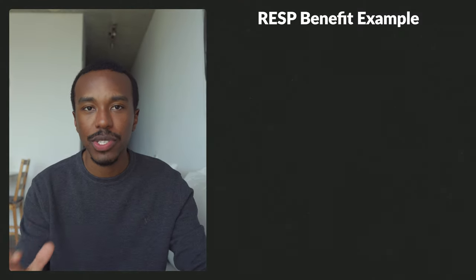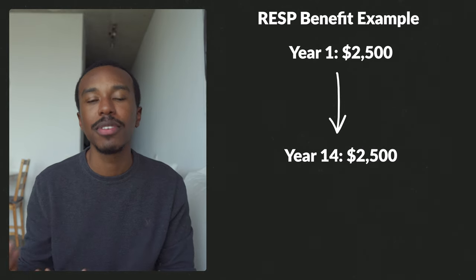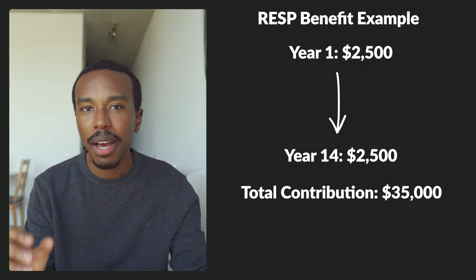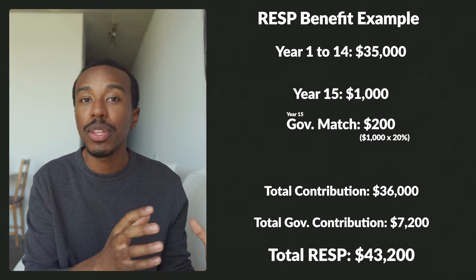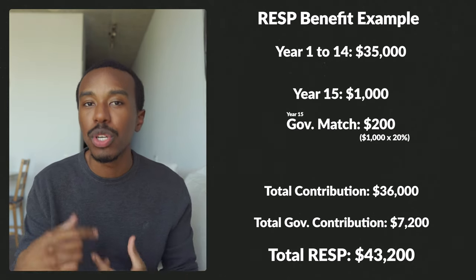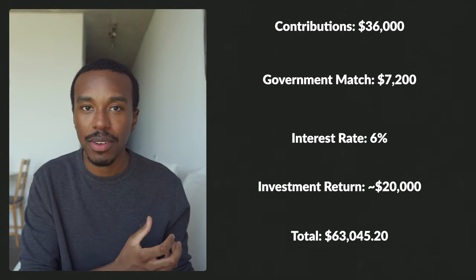Let's break down the benefit of receiving $500 a year. Say you opened up an RESP from when a child was born and put in $2,500 a year. After 14 years you would have contributed $35,000 and the government would have given you an additional $7,000. Then in the 15th year you add another $1,000 and the government matches it with $200 — bringing the total to $43,200: $36,000 you contributed and $7,200 from the government. On top of that, if you're also investing that money and see even a conservative 6% return, you'd have an additional $21,000, giving you roughly $63,000 total for your child's education.